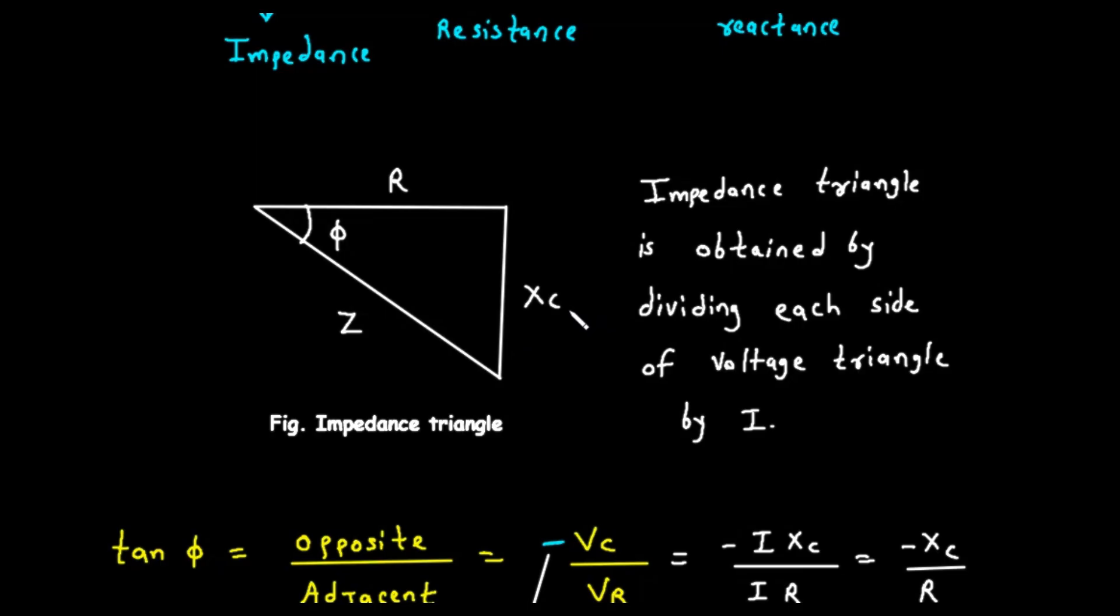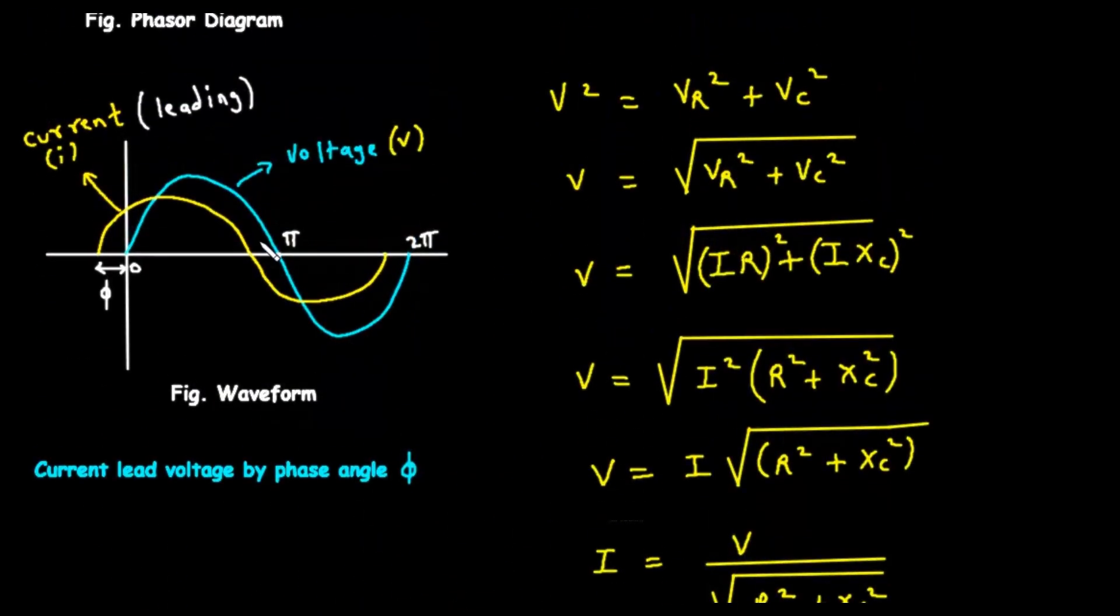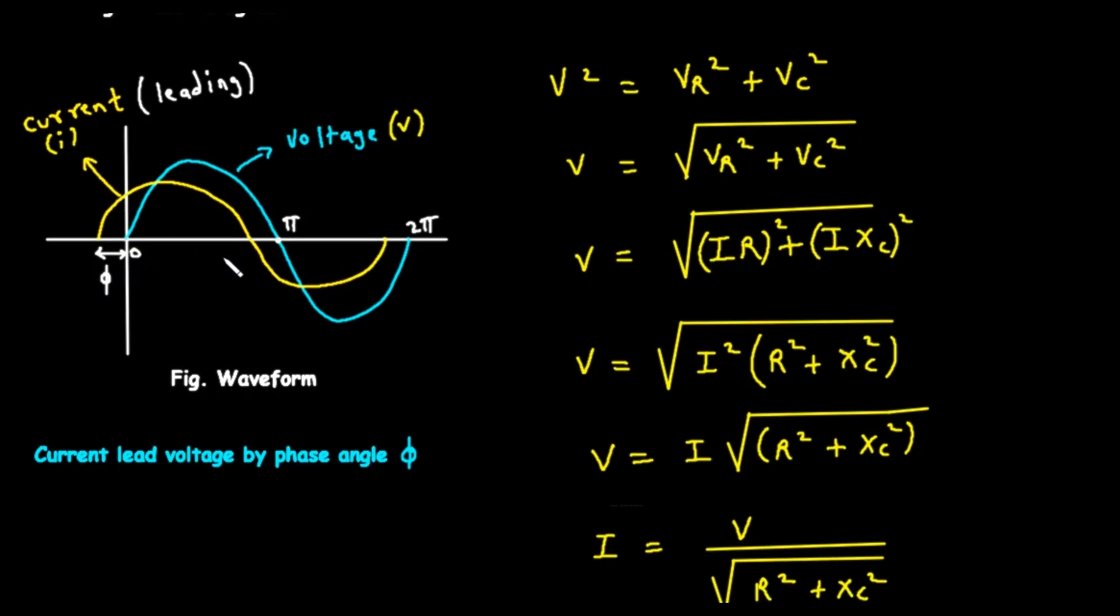Now, let's talk about the angle in these triangles, labeled with the Greek letter phi. This is the phase angle. It represents the angle of difference between the total voltage V and the total current I. Looking at our waveform diagram, Fig. Waveform, we can see this phase difference visually. The yellow sine wave represents the current, and the blue sine wave represents the voltage. Notice that the current wave reaches its peak and crosses the zero line before the voltage wave does. This is what we mean when we say current leads voltage. The amount by which it leads is exactly this phase angle phi.